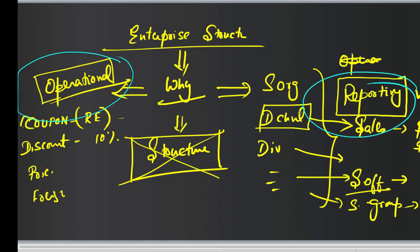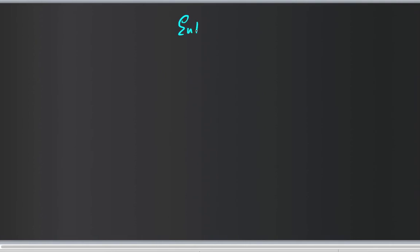So these are the two main uses of enterprise structure: one is operational and the second is reporting. There is a third, which is almost a subset of reporting.